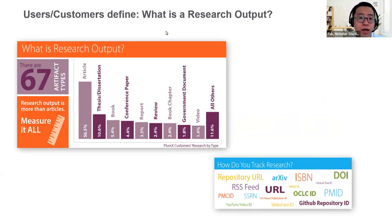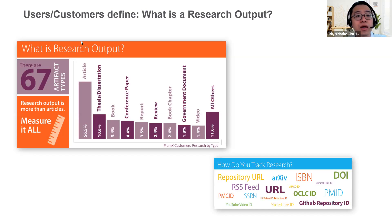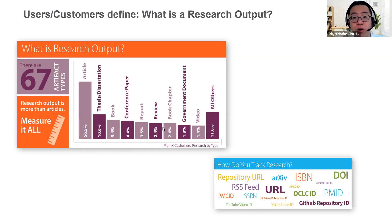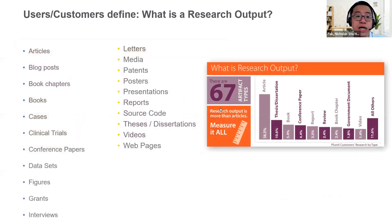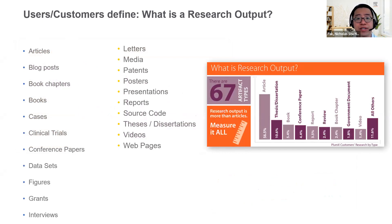Some of you will be asking what research outputs are, and they come in many different formats. There are up to 67 types of what we call artifacts. You may want to measure them in terms of articles, theses, books, conference papers, reports, reviews, book chapters, documents, videos, and many others. Your work will come out in all these different formats, so we're not saying there's only one fixed format. There are many different ways for you to track your impact in terms of research.